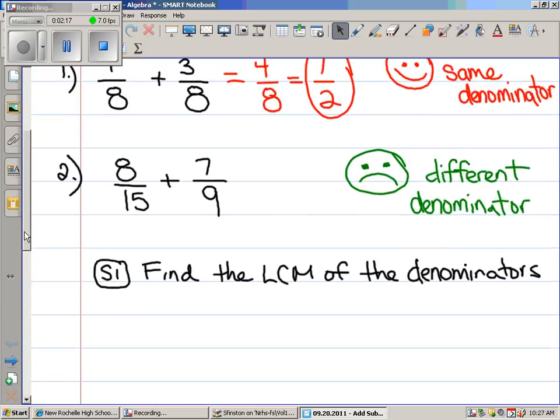We're going to do step one. We're going to find the LCM of the denominators. Elizabeth, what are you thinking? 15 and 9. What's the least common multiple of 15 and 9? Let's talk about those words. There's multiple and then there's factors. Which one is bigger? Multiples are bigger. Factors are smaller.